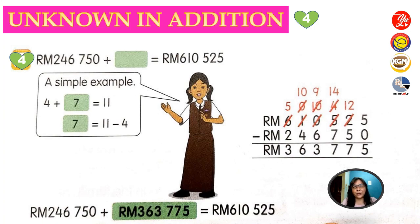Look at this question — unknown in addition with larger numbers. RM246,750 plus unknown equals RM610,520. Using a simple example: 4 plus 7 equals 11, so 7 equals 11 minus 4. We use the big number: RM610,520 minus RM246,750. The answer is RM363,775.